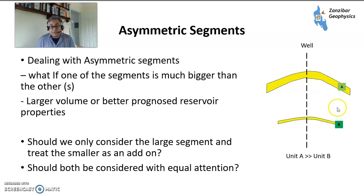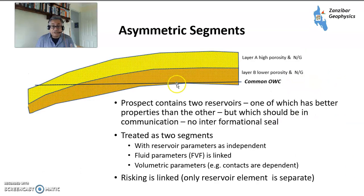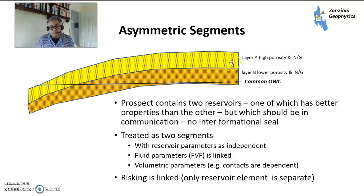You can also have asymmetric segments. If A is so much larger than B, are you going to even consider B? Maybe you just treat it as an add-on and make the main decision on A because it's so much larger — though that would come out in the decision tree anyway. Another type of asymmetric segment is if layer A has high porosity and high net-to-gross — that's better quality rock — while layer B has lower porosity and lower net-to-gross. You treat them as two segments, but they would be linked because they're in hydrodynamic communication with a common oil-water contact. You'd really only risk the reservoir element separately, since everything else is linked, because the chance of reservoir working for layer B is significantly worse than for layer A.